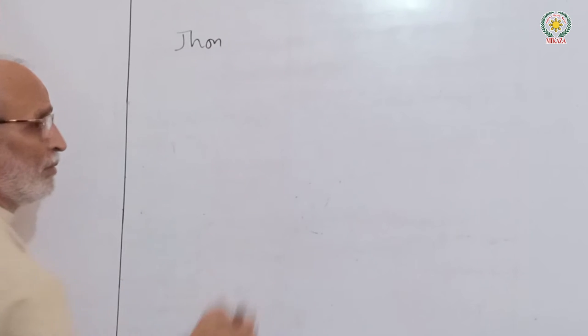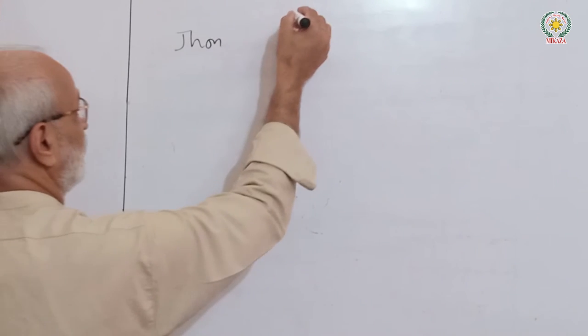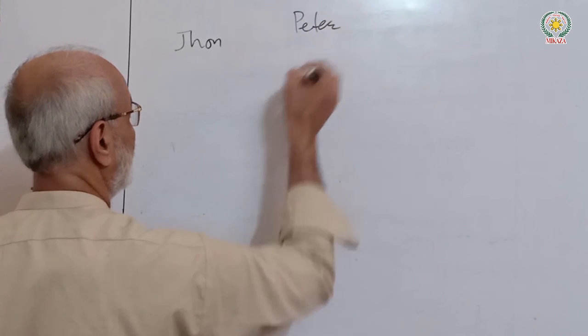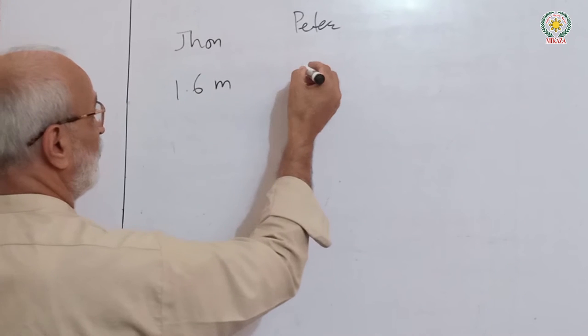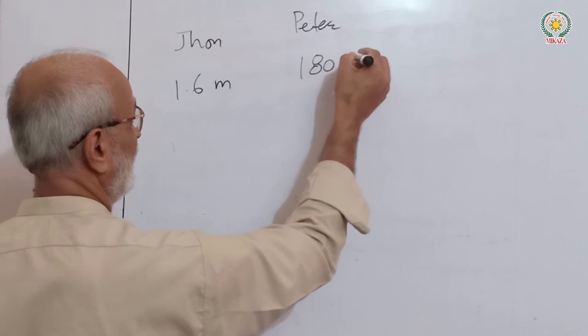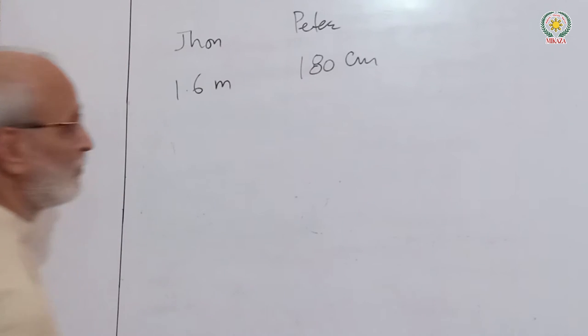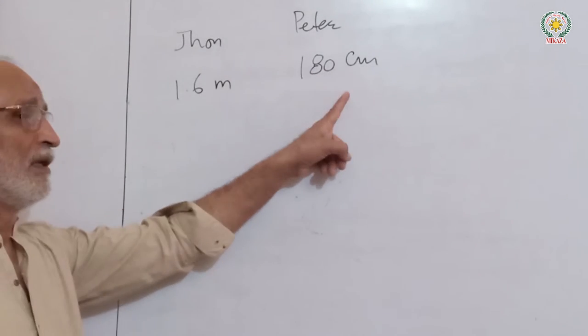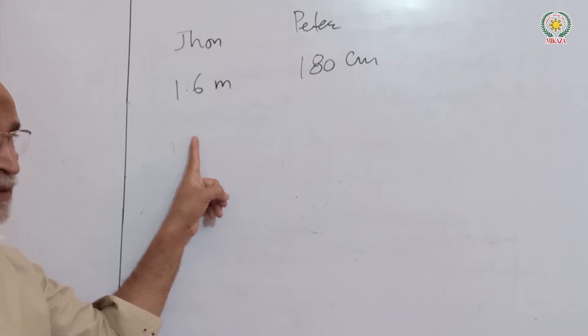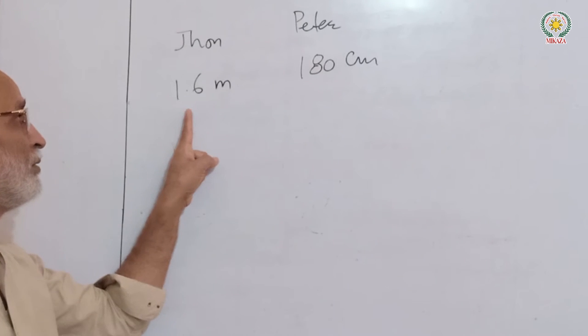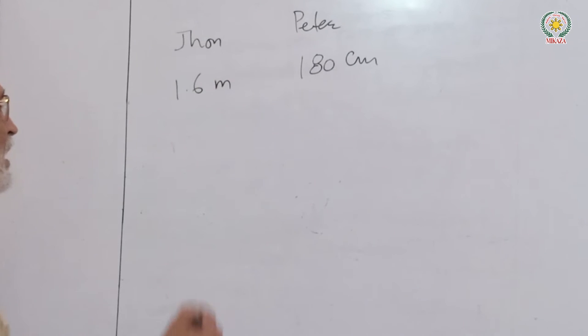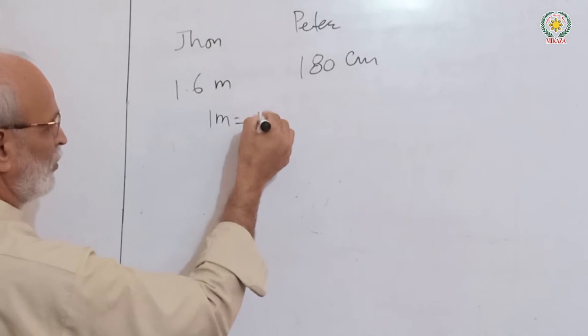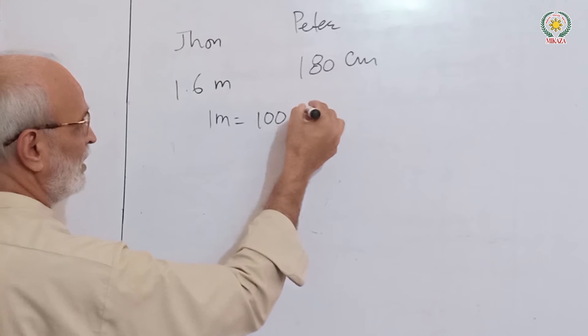Next example: John and Peter. John's height is 1.6 meters, and Peter's height is 180 centimeters. These units are different - one is meters, one is centimeters. We have to convert both to the same unit.